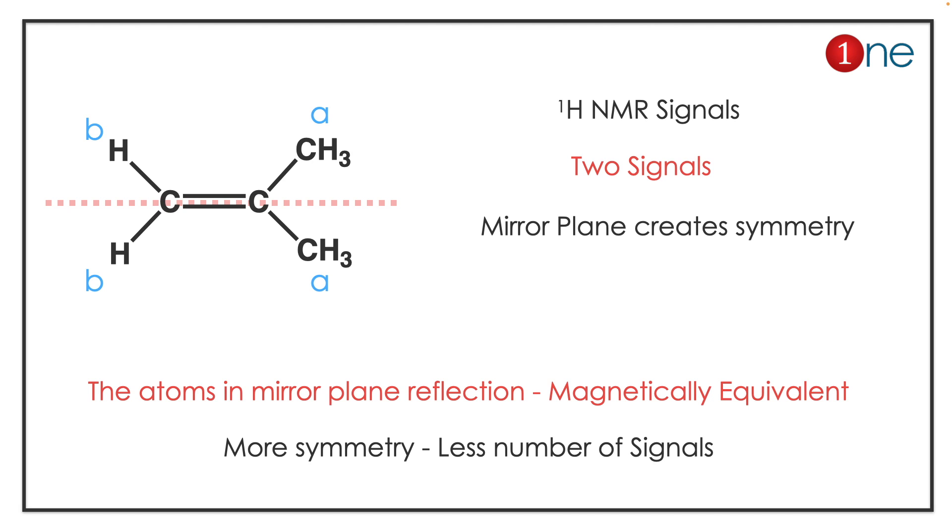So both hydrogens are the same, both methyl groups are the same. So the compound produces two signals here. The concept you ought to learn here is: symmetrical molecules will produce less number of signals. So the given compound produces only two signals.